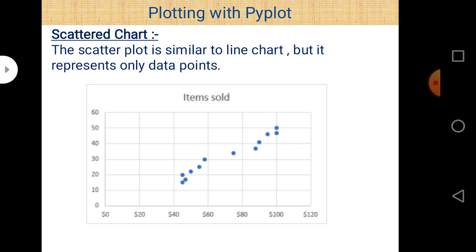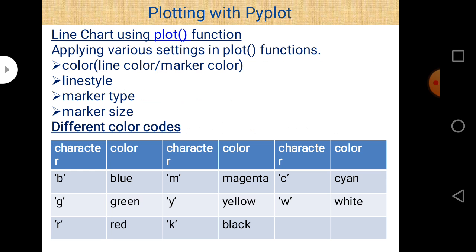Now we will discuss scatter chart in detail. There are some common terms useful for line chart, scatter chart, and bar chart. These are the different color codes used for almost all charts. The character B represents blue, G represents green, R represents red, M represents magenta, Y represents yellow, K represents black, and C and W are also available.